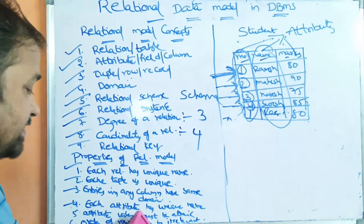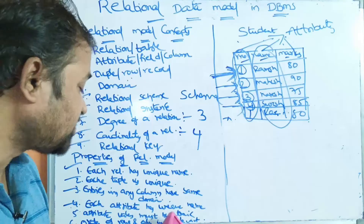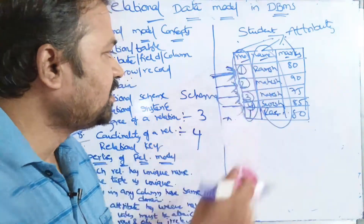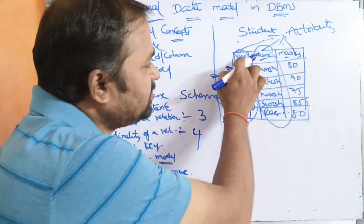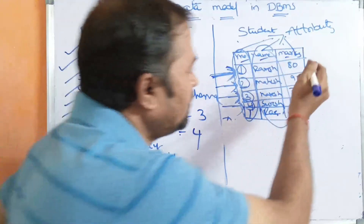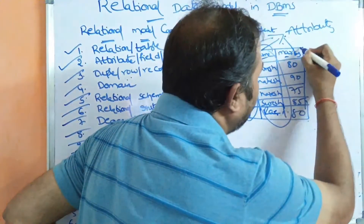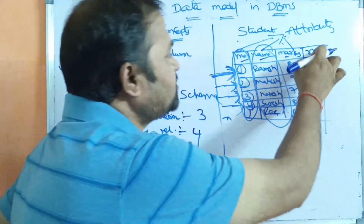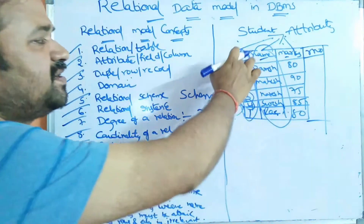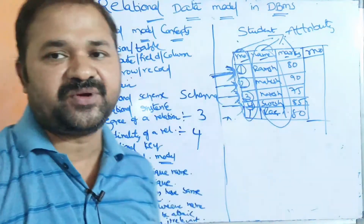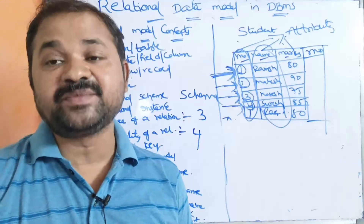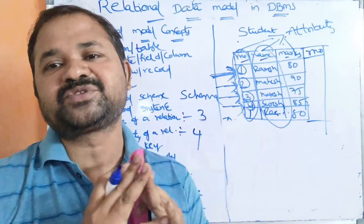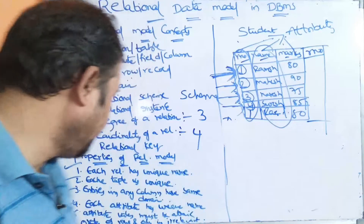The next property is: each attribute has a unique name. Here the attributes are roll number, name, and marks. We cannot give another attribute the name 'roll number,' because it is already given to the first attribute. So attribute names must be unique — duplicate names should not be given to attributes.